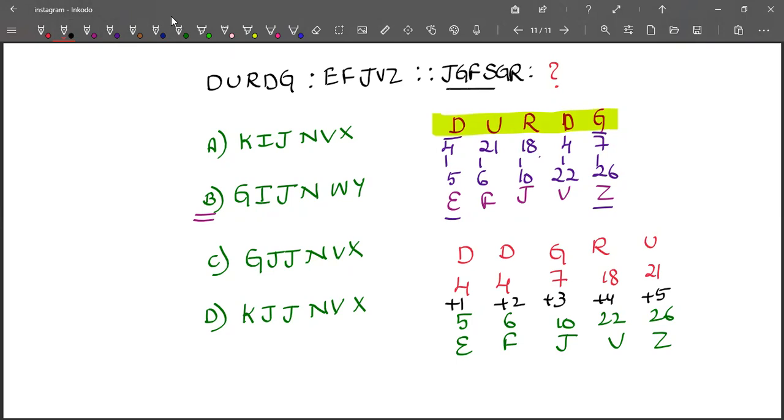Now come for J, G, F, S, R. J is 10, G is 7, F is 6, S is 19, R is 18. What we need to do first? We need to first arrange these letters in alphabetical order. So after arranging, we will be getting...